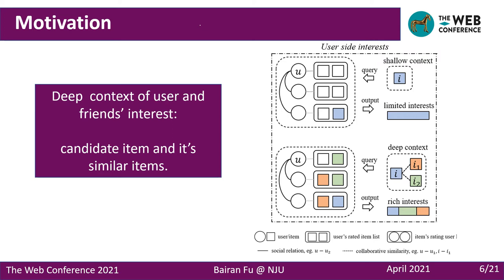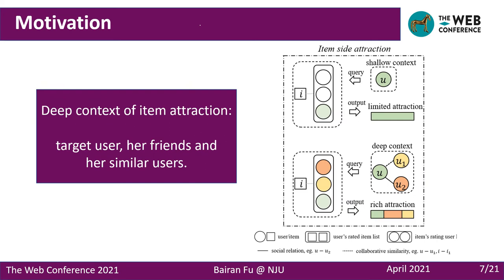Such limitation would lead to limited user interests and item attraction. In fact, when modeling user-side interests from users and friends' historical interacted items, not only the information related to the candidate item can help, but the information related to the candidate's similar items can also reflect the user's interests. And for item attraction, if the item's past consumers are a friend of the targeted user or have a similar consumption habit to the target user, the item may be more attractive to the target user.